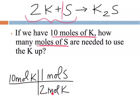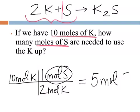So, this two to one ratio down at the bottom came from up here. So, 10 divided by 2, one mole of sulfur, that's what your units are going to be in, is going to equal 5 moles of sulfur, should be your answer.